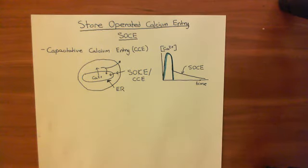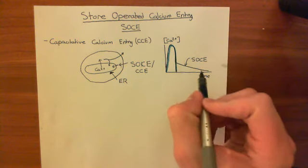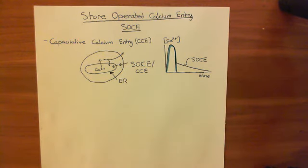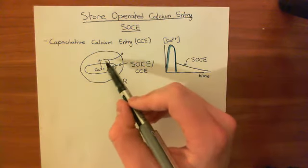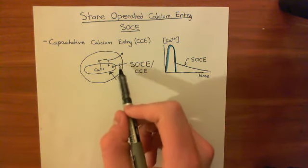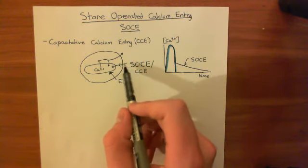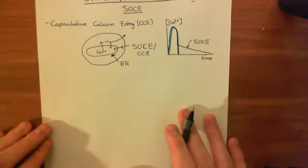So that's what store-operated calcium entry is. We are now going to look at the exact mechanisms underlying this graph. We'll start with stimulating the cell with histamine, look at the GQ pathway as revision, see how calcium is released from the intracellular stores, how some calcium is reuptaken while some is extruded, and then see the mechanisms by which the ER recognises that calcium is too low and activates a channel in the cell membrane to allow calcium to move from the extracellular space into the ER.